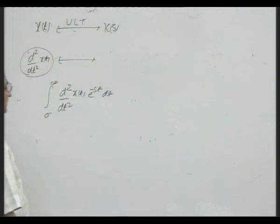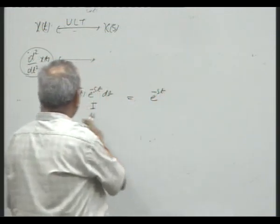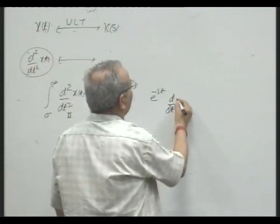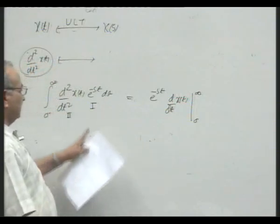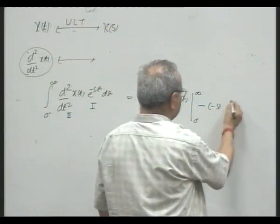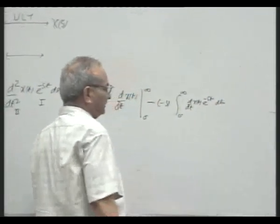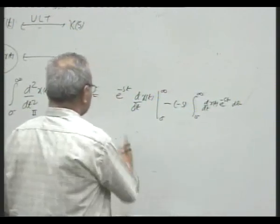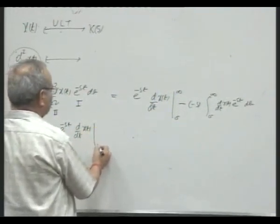Now we have to integrate this integral. Let us take the second derivative as the first function and e^(−st) as the second function. This becomes the first function into the integral of the second. The integral of e^(−st) is the first derivative, that means d/dt of x(t), and this is to be evaluated from zero minus to infinity. Then, minus the differential coefficient of the first into the integral of the second.